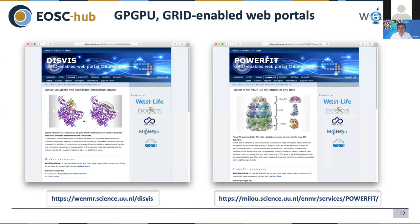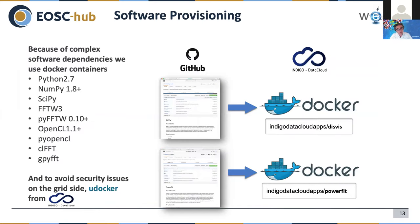Some of our portals use GPU resources, which are available on the EOSC infrastructure. The software behind these portals requires quite a number of libraries — complex software dependencies — and you cannot ask remote site administrators to install these for you. A good solution is Docker containers. Historically Docker had security issues on the grid due to root access requirements, but thanks to a solution from the INDIGO DataCloud project, we can use udocker — a user-based Docker version — to run containers on the grid, avoiding all software installation trouble.